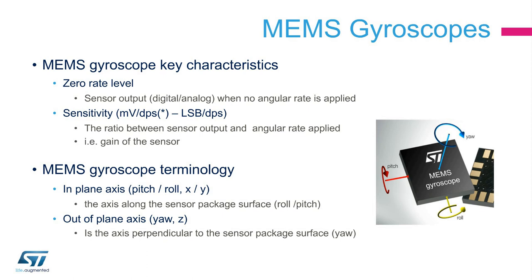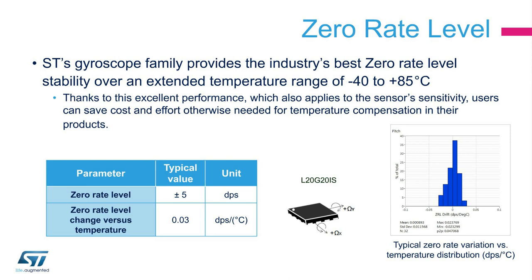There are two in-plane axes called pitch and roll, the X and Y axes. The third is an out-of-plane axis called yaw, the Z axis. Zero-rate level refers to the analog or digital sensor output value when no angular rate is applied. Sensitivity always refers to the ratio between the output and input of the sensor. ST's gyroscope family provides the industry's best zero-rate level stability over an extended temperature range of minus 40 to plus 85 degrees Celsius.